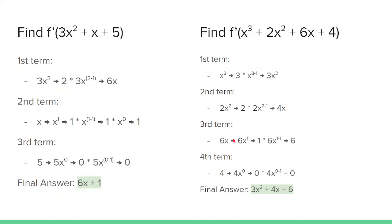For the third term, 6x, which is actually 6x to the first, move the exponent to the front and subtract 1 from the exponent to get 6. For the last term, it's a constant, so the derivative is 0. This is the same logic as before. Our final answer is 3x squared plus 4x plus 6.